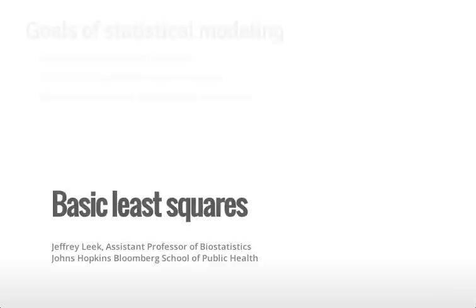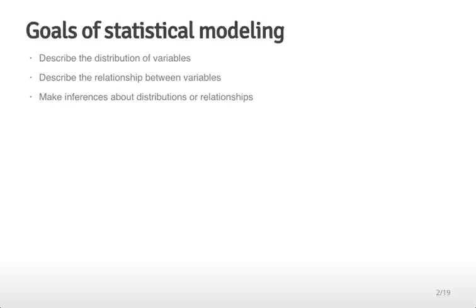This is the first in a series of lectures about regression and we're going to start off pretty simple talking about basic least squares. The goals of statistical modeling are to describe the relationship between variables or their distribution and then maybe to make some inference about either the distributions or relationships that you've described. This first lecture is going to talk primarily about describing the distribution of variables and describing the relationship between variables.